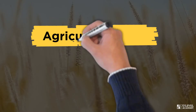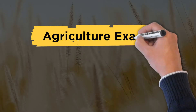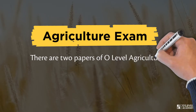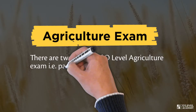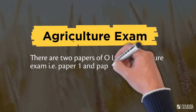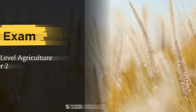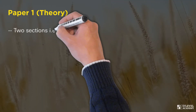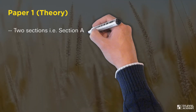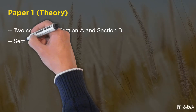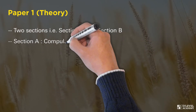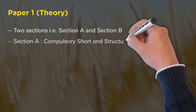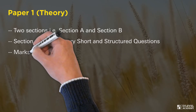There are two papers in the O-Level Agriculture exam: Paper 1 and Paper 2. Paper 1 is Theory and contains two sections — Section A and Section B. In Section A there are compulsory short and structured questions worth 70 marks.